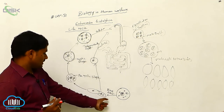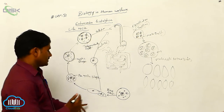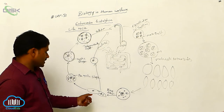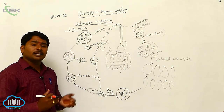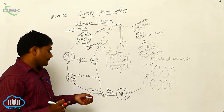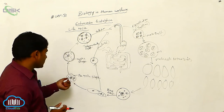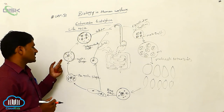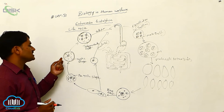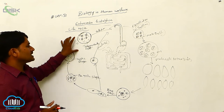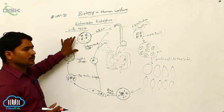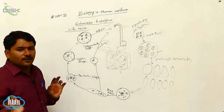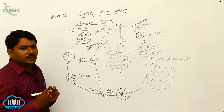Here the trophozoite undergoes repeated binary fission. Trophozoites are converted into the precystic stage, and the precystic stage is converted into the cystic stage. The cystic stage develops four nuclei, which is called the tetranucleate cyst. These tetranucleate cysts are discharged by the fecal matter of the infected person.